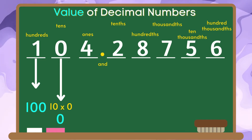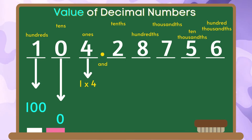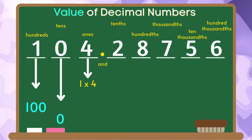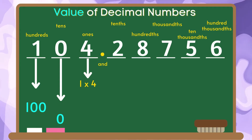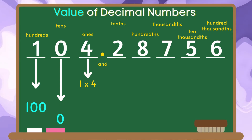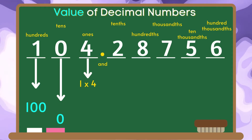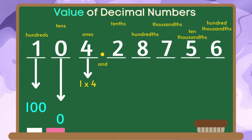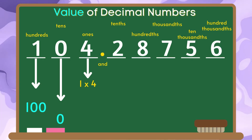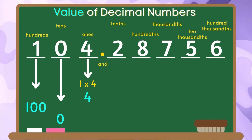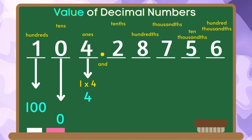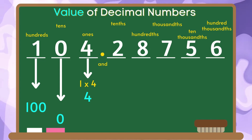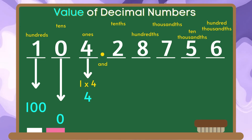The place value of the digit four is ones. We are going to multiply the digit four by one and the product is four. The value of the digit four is four.